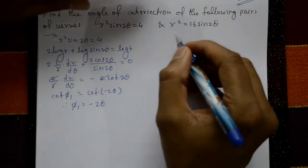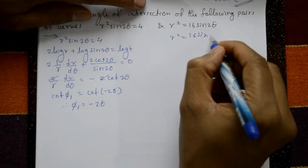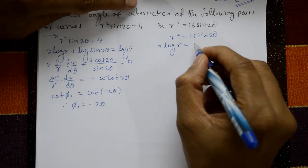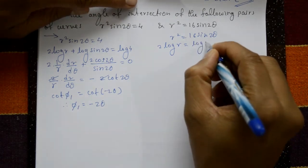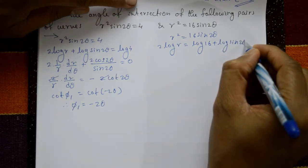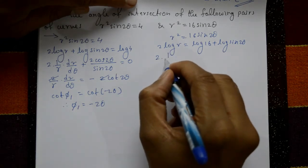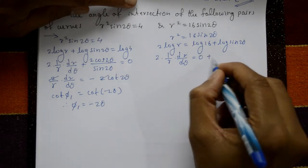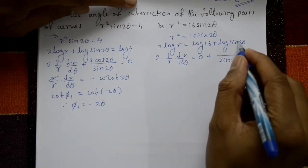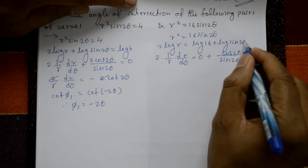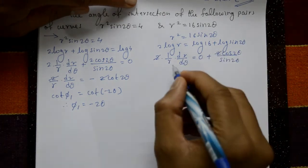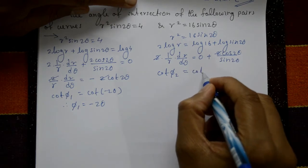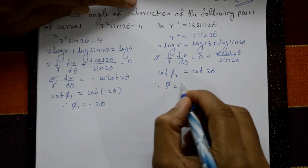Now the second curve: R² = 16 sin2θ. Taking log on both sides: 2logR = log16 + log(sin2θ). Differentiating with respect to θ: (2/R)·(dR/dθ) = (1/sin2θ)·cos2θ·2. The 2's cancel, giving cotφ₂ = cos2θ/sin2θ = cot2θ. Therefore φ₂ = 2θ.